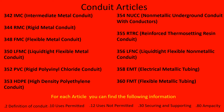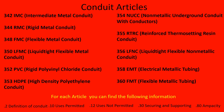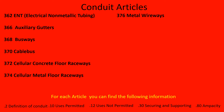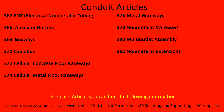Article 358 is EMT, electrical metallic tubing — one we're all very familiar with. 360 is FMT, flexible metallic tubing. 362 is ENT, electrical non-metallic tubing, more commonly called smurf tube. 366 is auxiliary gutters. 368 is busways. 370 is cable bus. 372 is cellular concrete floor raceways. 374 is cellular metal floor raceways. 376 is metal wireways. 378 is non-metallic wireways. 380 is multi-outlet assembly. 382 is non-metallic extensions. 384 is strut type channel raceway.